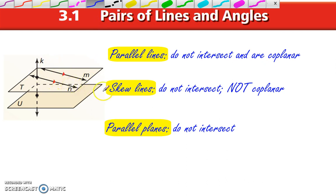Skew lines do not intersect but they are not coplanar. So an example over here, line M and line K. They don't intersect and they are not coplanar. They are not in the same plane.